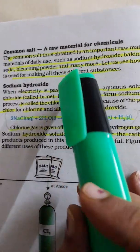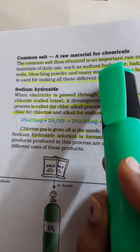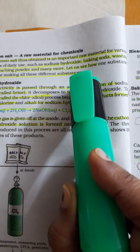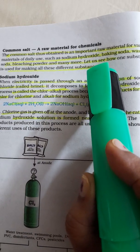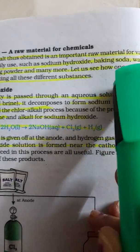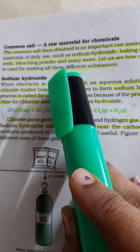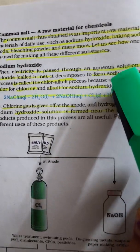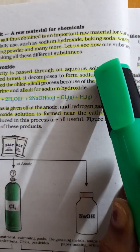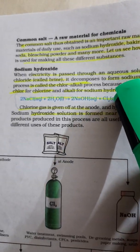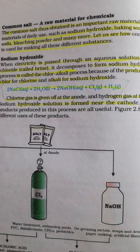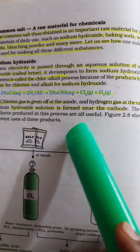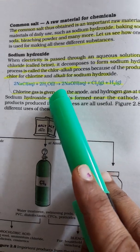Common salt is a raw material for chemicals. The common salt obtained is very useful and of great importance, because it is a raw material for so many materials of daily use — like sodium hydroxide, baking soda, washing soda, bleaching powder, and many more. We will see how you can use sodium chloride to make so many different substances. First of all, we will start with sodium hydroxide.